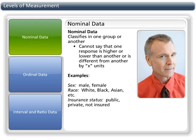Nominal data classifies in groups. There is no inherent ranking to nominal data. In other words, one cannot say that one response is lower or higher than another. Some examples would be sex — male versus female — or insurance status, as public, private, or non-insured.